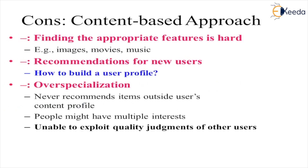The disadvantages: finding appropriate features is hard — for example, images, movies, and music are very difficult to work with. For new users, it is hard to build a user profile when someone is enrolling in the system for the first time, as we don't have their previous likes and dislikes. Overspecialization is another issue — the system never recommends items outside the user's content profile. For example, I may like DC movies, but I should also be recommended movies outside DC, since people can have multiple interests. The system is also unable to exploit quality judgments from other users.